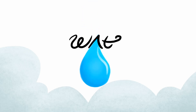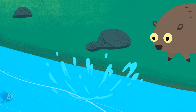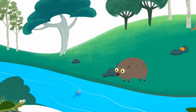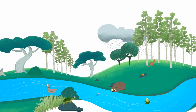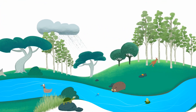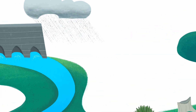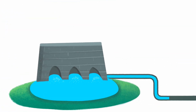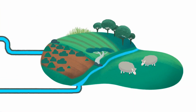Environmental Water – What, Why and How. Before many of our rivers were dammed, water flowed freely through the landscape. Now much of the rain and runoff is captured in the dams and used to supply towns, industry and farms.